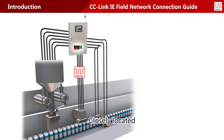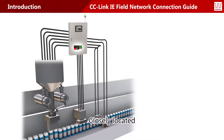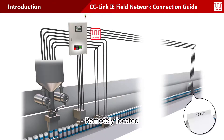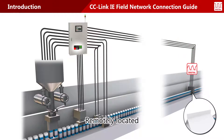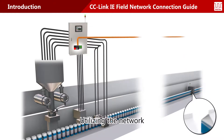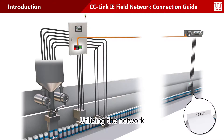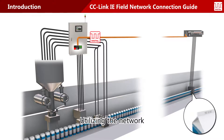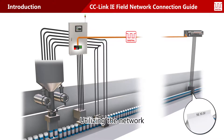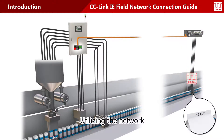A controlled device can be directly wired to the input and output module if it is closely located. But it is troublesome to run multiple analog input and output cables to a controlled device in a remote location. By utilizing the network, input and output for the controlled device in a remote location can be reliably controlled with only one network cable.